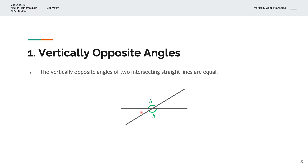Similarly, if we were to label this angle as A, the angle that is vertically opposite that angle is also equal to A. Notice that this is a straight line, and so A plus B make up angles on a straight line, and so they must equal 180 degrees. And 2A plus 2B represent all the angles surrounding a point, and the angles around a point is equal to 360 degrees.